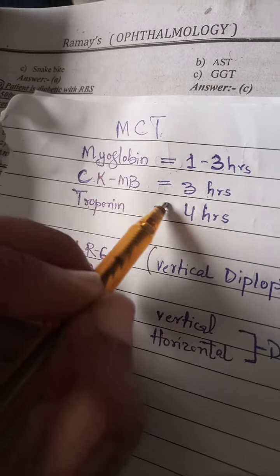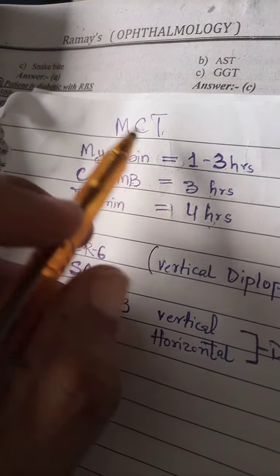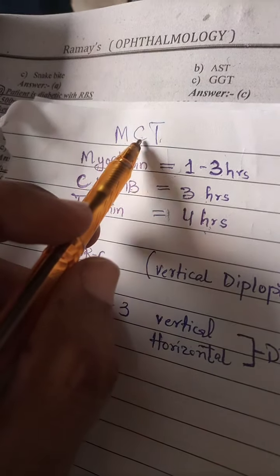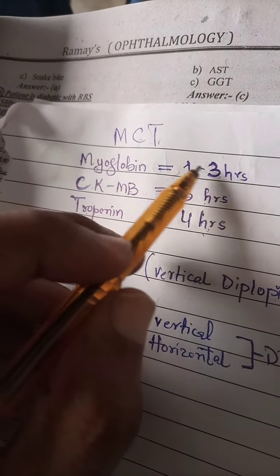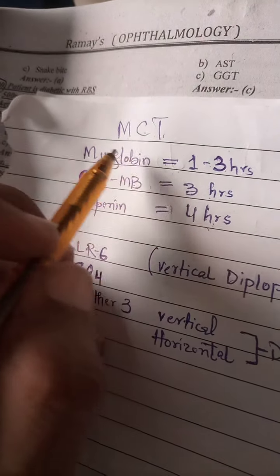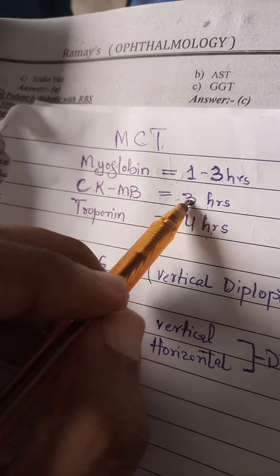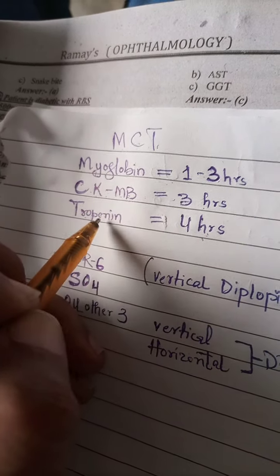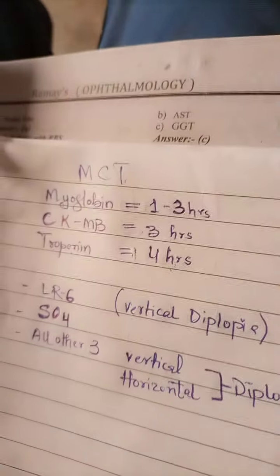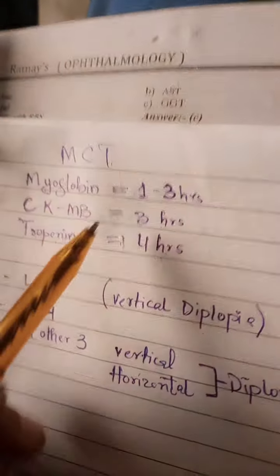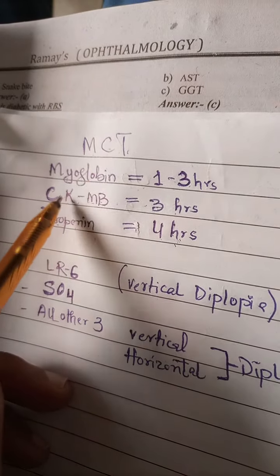T stands for troponin, which is raised after four hours of infarction. So the mnemonic is MCT: myoglobin one to three hours, CK-MB after three hours, and troponin after four hours. In this way we can memorize MCT.